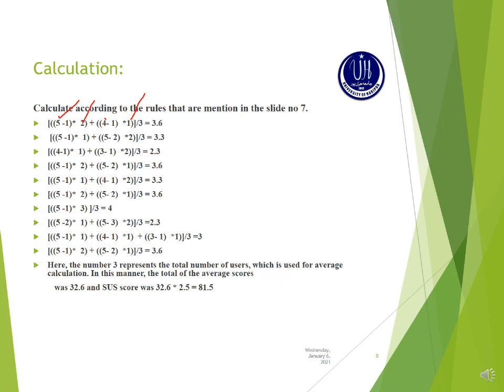This gives 3.6. We divide each question total by 3 because the total number of users is 3. This is the method of calculation for group data — calculating these average values per question and then summing them to get the final SUS score.